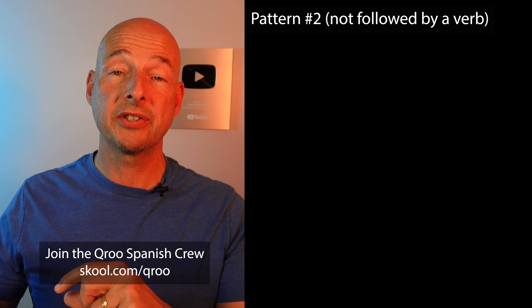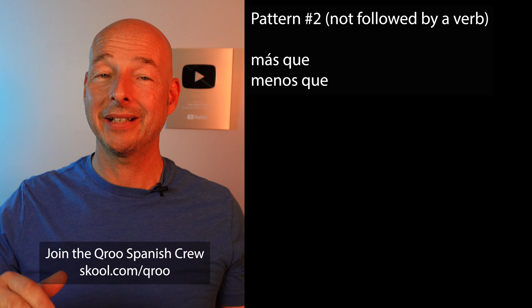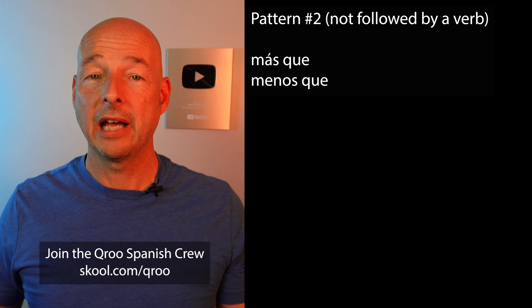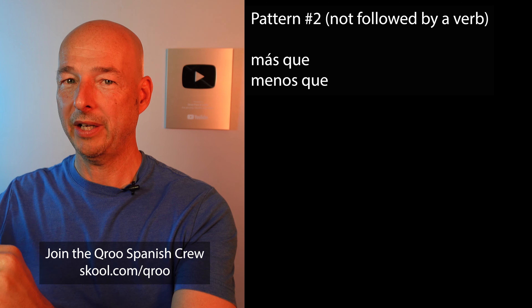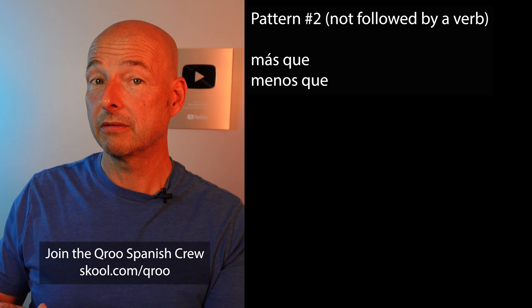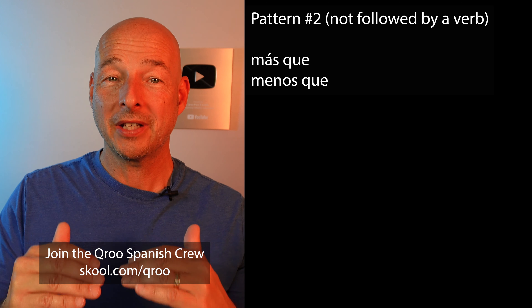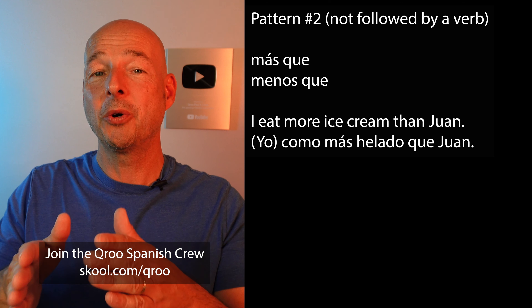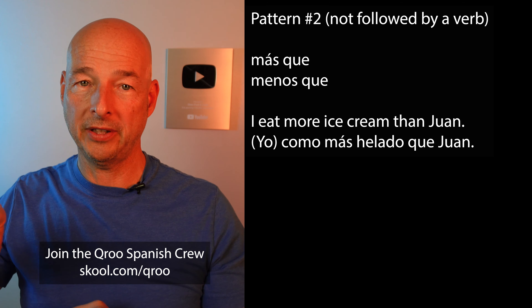Let's go on to our second pattern — in parentheses: 'not followed by a verb.' That's what's important here. Más que: more than. Menos que: less than. No verb. The most important thing here is no verb. 'I eat more ice cream than Juan' — yo como más helado que Juan. No de lo que or anything else, because we don't have another verb after que. It's just Juan.